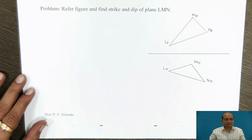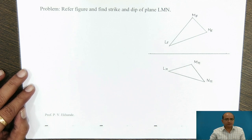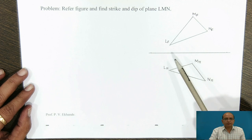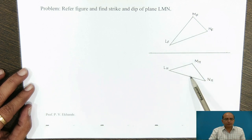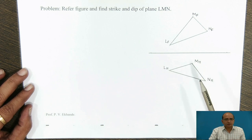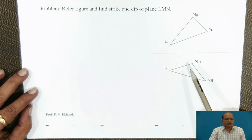Let us consider this problem. We have to refer the figure and from the given figure we have to find out the strike and dip of the plane. The plane is LMN for which front view and top view are given. In the front view the points are denoted as LF, MF, and NF. Certain steps are to be followed on this figure so that we will get the edge view of the plane, and once we get the edge view we will be able to identify the strike and dip of the plane.